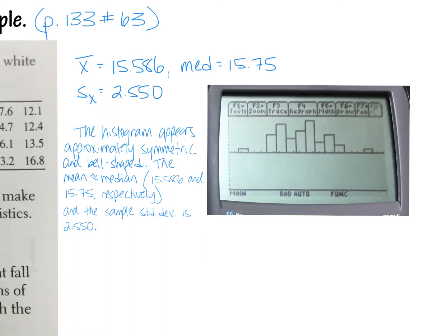Once you've typed the data in, check your one-variable stats to verify. Here's the x-bar, here's the median, here's the sample standard deviation. To do that, go up to the calculate option — that's F4 — and the very first option is one-variable stats. That gives you the mean, median, mode, Q1, Q3, standard deviation, and more. You have to tell it to use list one. If your numbers don't match mine, you made a typing error somewhere.